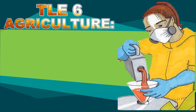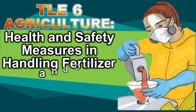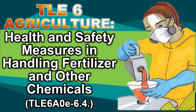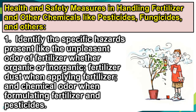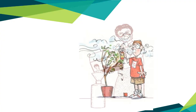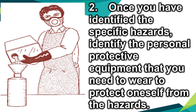TLE 6: Agriculture — health and safety measures in handling fertilizer and other chemicals like pesticides, fungicides, and others. Step one: identify the specific hazards present, such as the unpleasant odor of fertilizer (whether organic or inorganic), fertilizer dust when applying, and chemical odor when formulating fertilizer and pesticides.